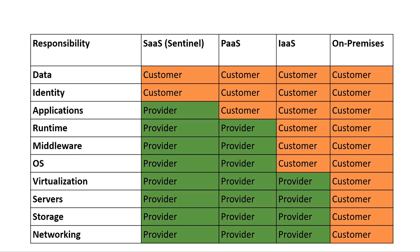Management overhead in IaaS compared to on-premises is decreased. Moving to PaaS decreases it further, where the customer maintains only the applications, identity, and data. But in SaaS, which is the Microsoft Sentinel model, you are maintaining only the data and the identities and accounts — that falls under identity and access management.